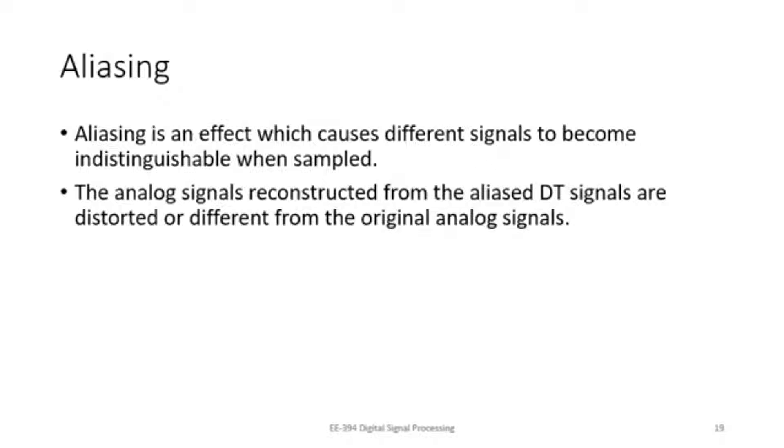We can define aliasing as an effect which causes different signals to become indistinguishable when they are sampled. And the analog signals reconstructed from the aliased discrete time signals are distorted or different from the original analog signals.